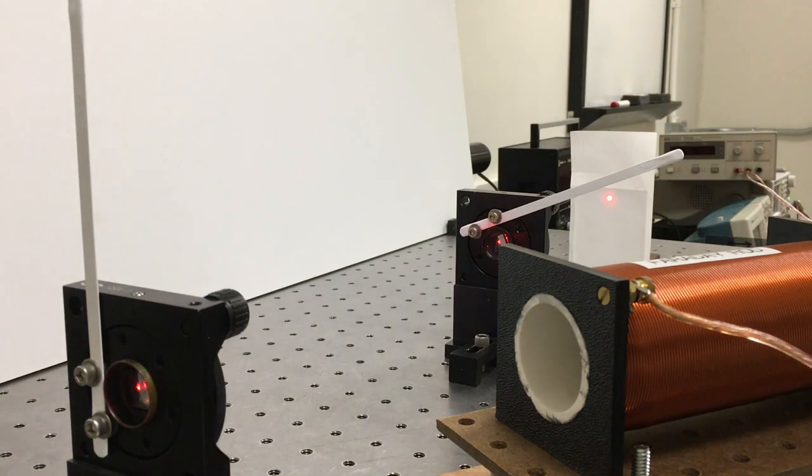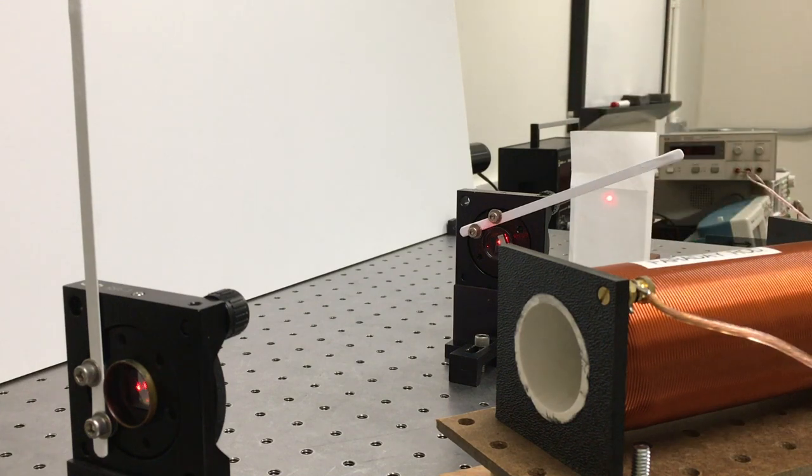The Faraday effect is when an object, in today's case a glass rod, when it's in a magnetic field, affects the polarization.